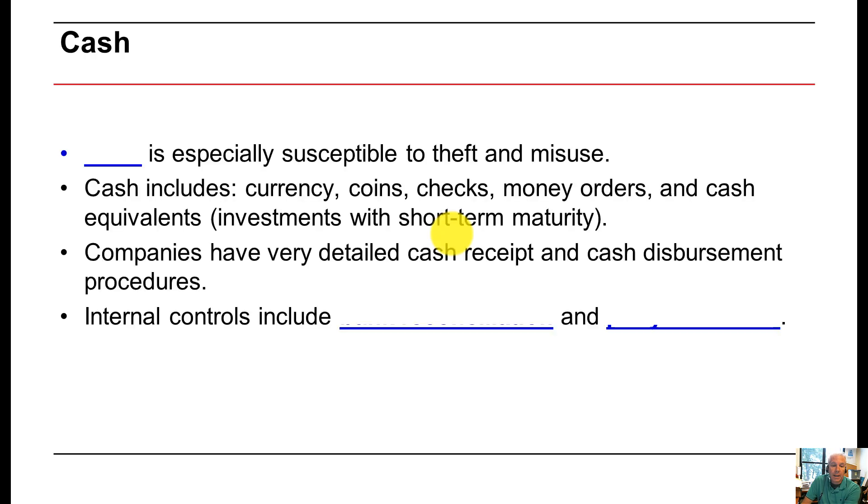Let's cover a little bit about cash and why it's important. We know that cash is especially susceptible to theft and misuse. What does cash include? Well, it includes basically currency, coins, checks, money orders, and cash equivalents. These are basically investments like a CD with a short-term maturity of 90 days or less. Companies must keep very detailed cash receipts and cash disbursement journals and procedures have to be in place. Internal controls over cash include two primary things, bank reconciliations and petty cash funds.